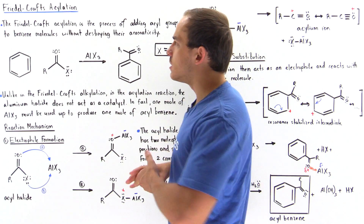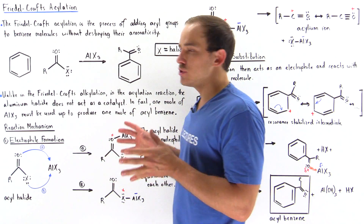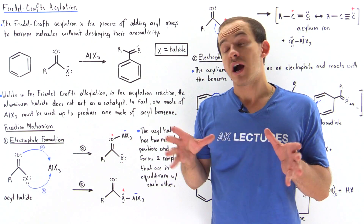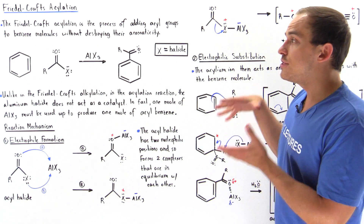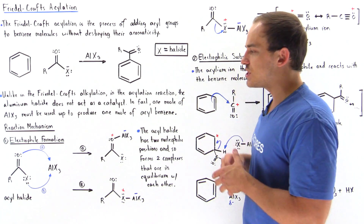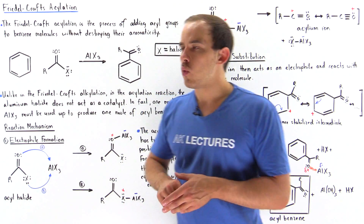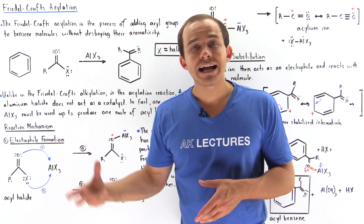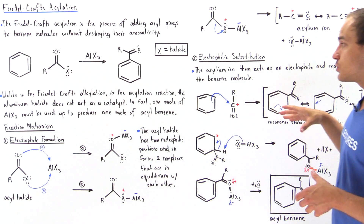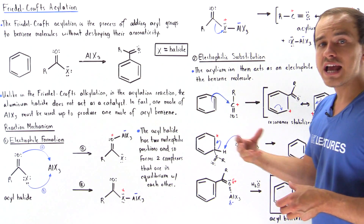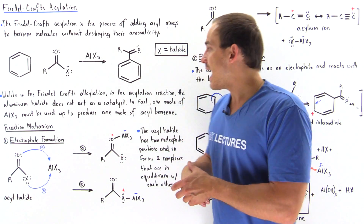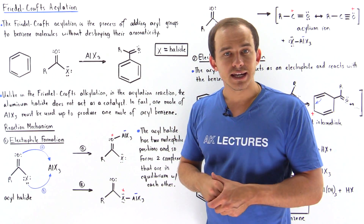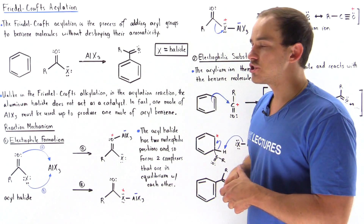Let's take a look at the reaction mechanism of this acylation of benzene. I've broken down this mechanism into two sections. In section one, we basically form our electrophile. In section two, that electrophile reacts with the benzene to actually form our acyl benzene.